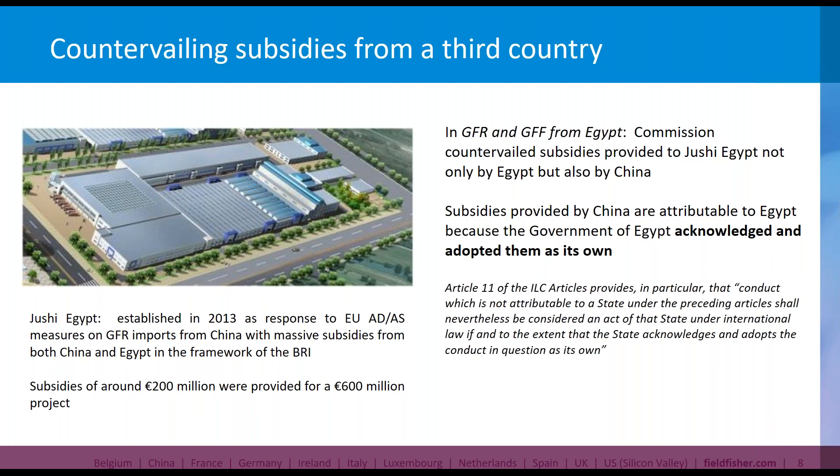When we brought the complaint, we had one key challenge to overcome: if you do a very conservative and narrow reading of the applicable rules, one could interpret them as only regulating the countervailing of subsidies provided by the country where production is located. We had to overcome this hurdle and convince the Commission to also countervail the subsidies coming from China. We explained to the Commission the factual background: the only producer in Egypt was a Chinese state-owned company.